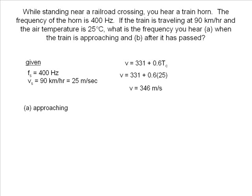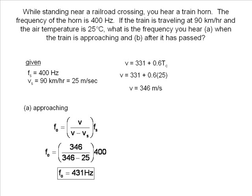In part A, we are looking to find the frequency when the train is approaching. This is the formula for a moving source. The velocity of the source is subtracted from the velocity of sound because the train is moving towards the observer. Substitute in the known values. It can be seen the frequency increases.